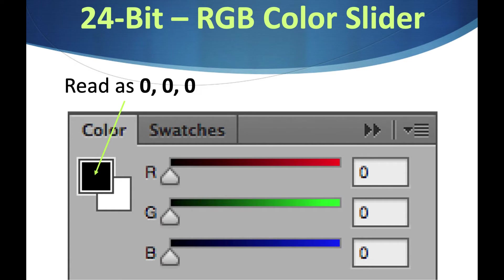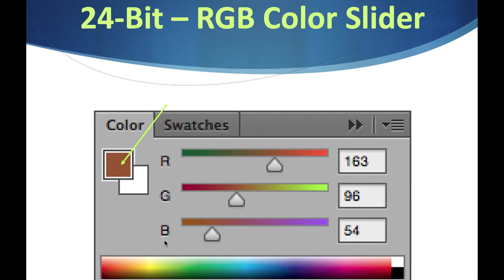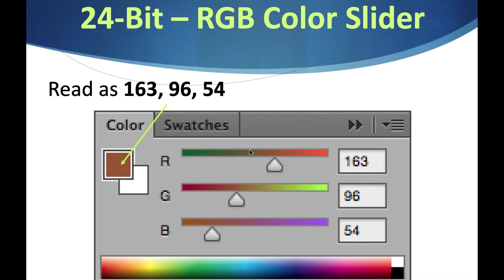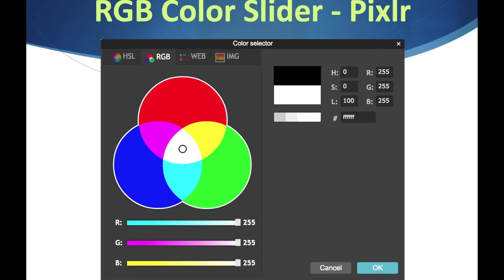Looking at the sliders: 0, 0, 0 is black with all sliders down. This color is 163 red, 96 green, and 54 blue — it's a warmer brown color because it has more red and green with not much blue. That's how RGB numbers represent color.